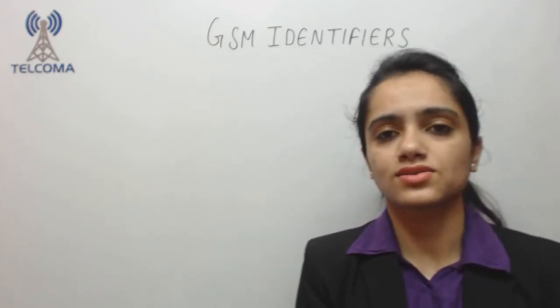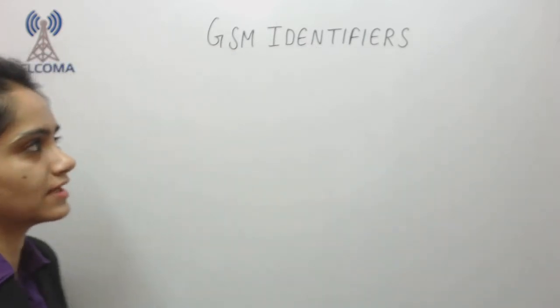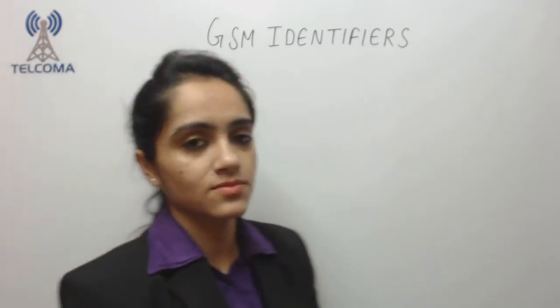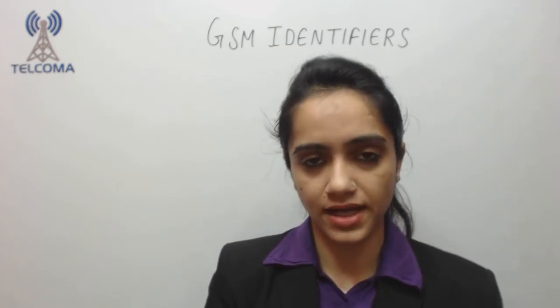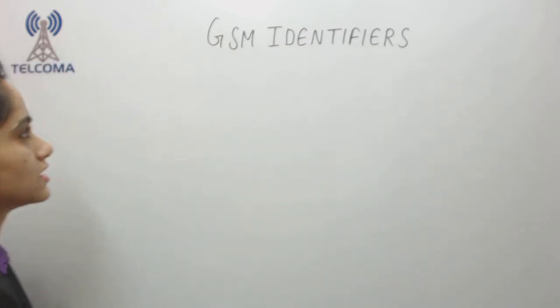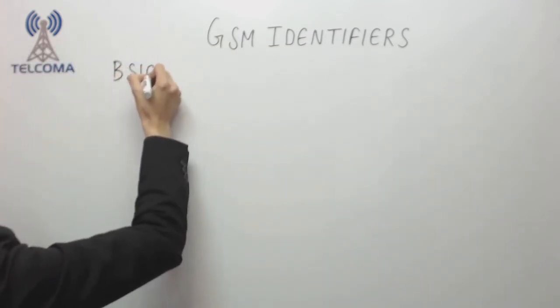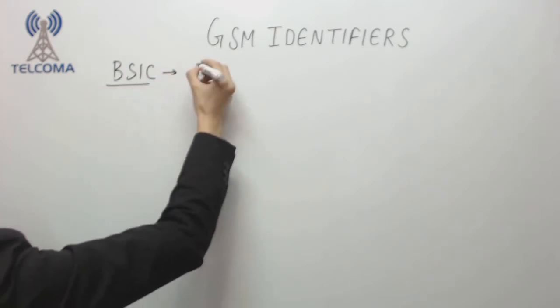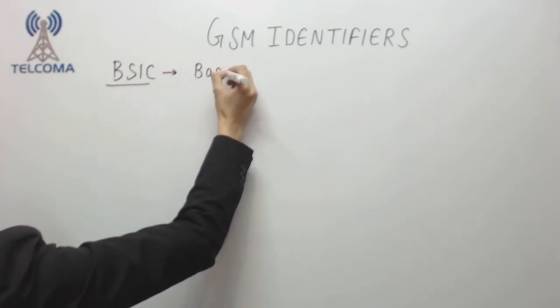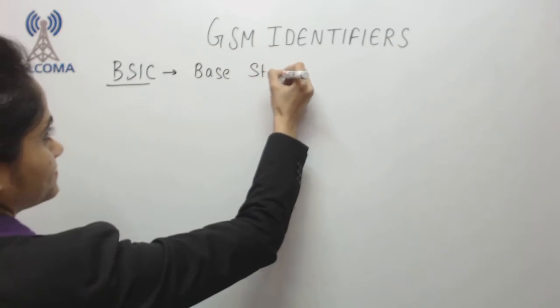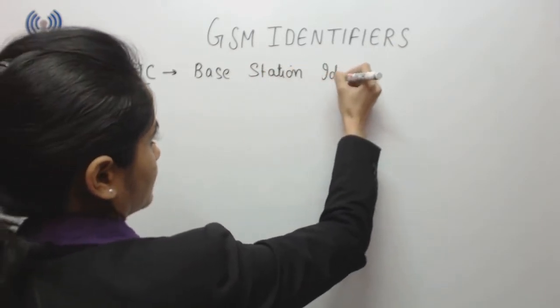Hello and welcome to another class on GSM identifiers. Today we are going to continue with GSM identifiers. In the last class we had discussed about MSISDN, IMSI number, temporary mobile subscriber identity, and MSRN. Now today we are starting with BSIC, which is the Base Station Identification Code.